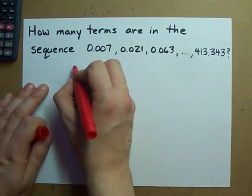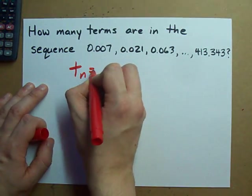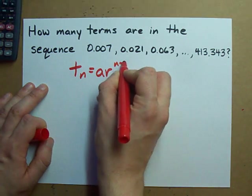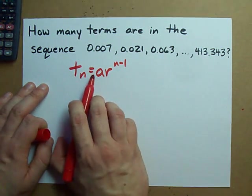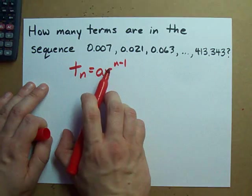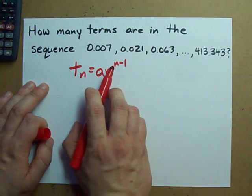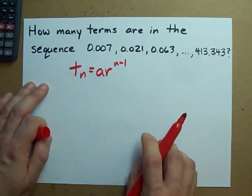Luckily for us, we have a formula for geometric sequences. Any particular term is the first term times the common ratio to the power of n minus 1, where n is the number of the term that we're looking for.